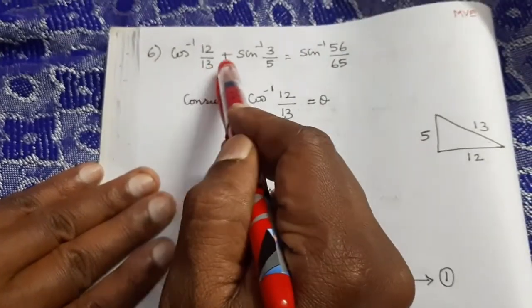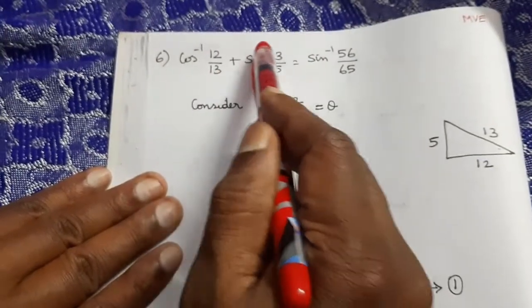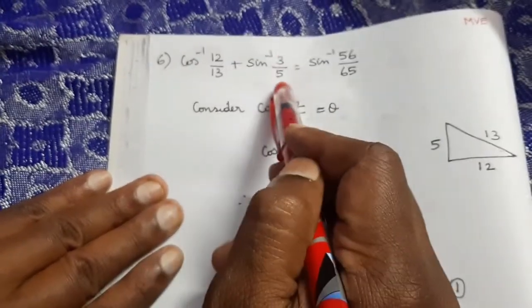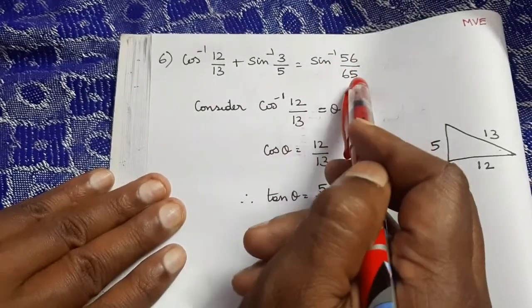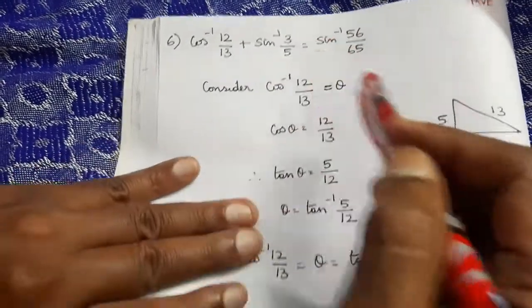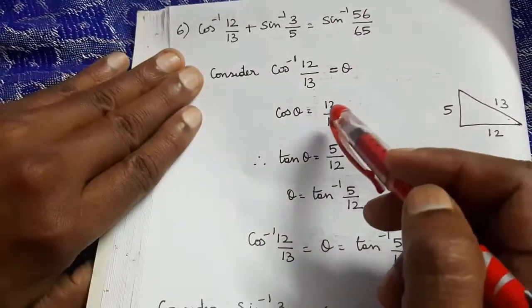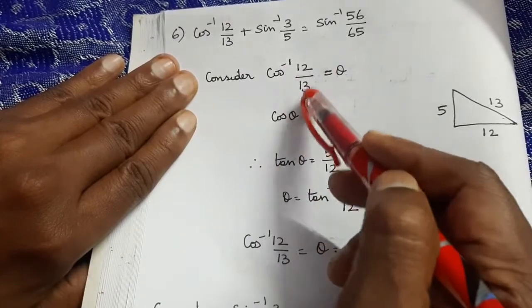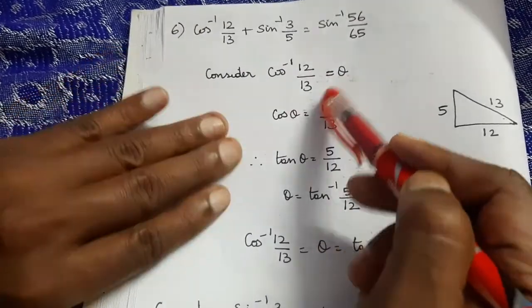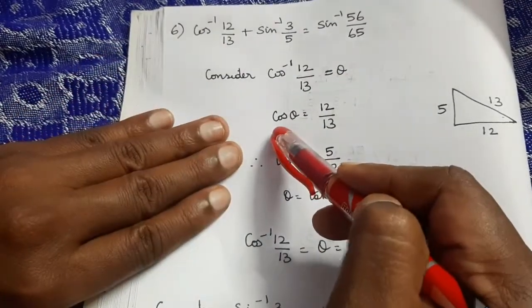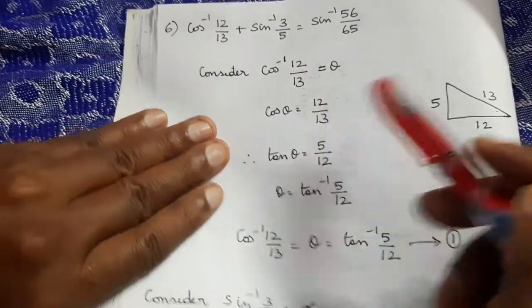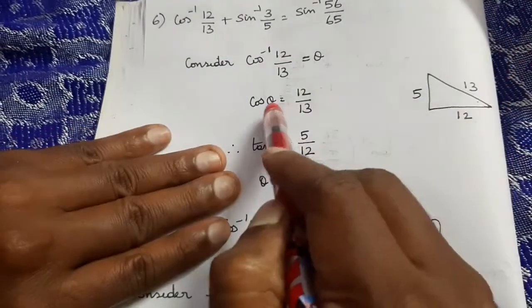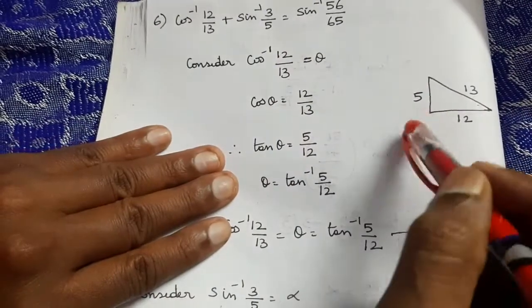Question 6: Prove cos⁻¹(12/13) + sin⁻¹(3/5) = sin⁻¹(56/65). Let θ = cos⁻¹(12/13), so cos θ = 12/13. In a right-hand triangle, adjacent = 12, hypotenuse = 13.